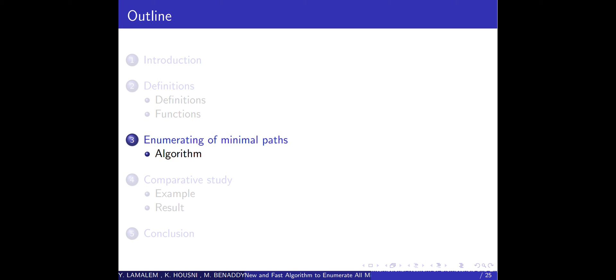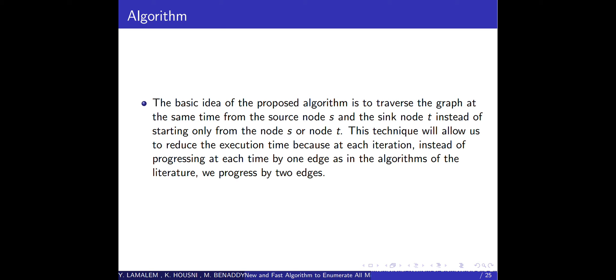Now we have to explain the proposed algorithm. The basic idea of the proposed algorithm is to traverse the graph at the same time from the source node S to the sink node T. Instead of starting only from the source node S or node T, this technique will allow us to reduce the execution time because at each iteration, instead of progressing at each time by one edge as in the algorithms of the literature, we propose to progress by two edges at the same time.